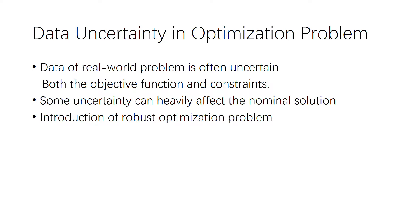We start with data uncertainty in optimization problems. The data of real-world problems often has a lot of uncertainty, and such uncertainty will exist in both the objective function and also the constraints. We will find that some uncertainty can probably affect the nominal solution, or sometimes even cause the problem to be unsolvable, which means that the feasible set is an empty set. So we will introduce robust optimization to solve this uncertainty.